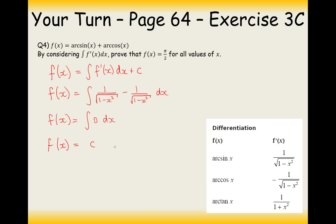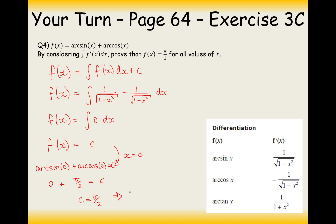To find the constant, plug in an easy value — x = 0. Arc sine of 0 is 0, and arc cos of 0 is π/2. So 0 + π/2 = c, meaning c = π/2. Therefore f(x) = arc sine x + arc cos x is always equal to π/2 for any value of x.